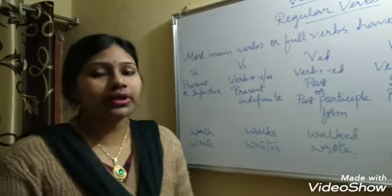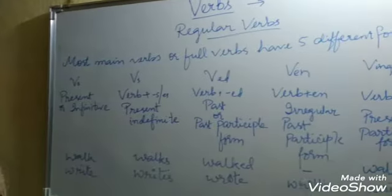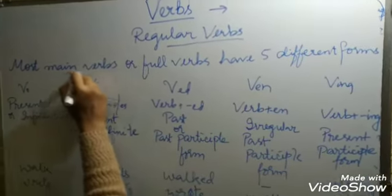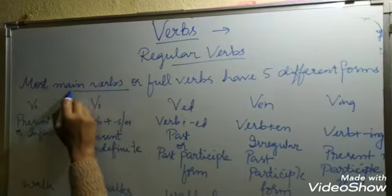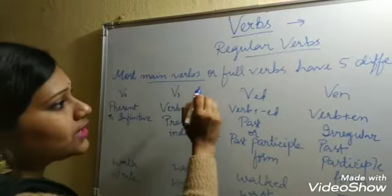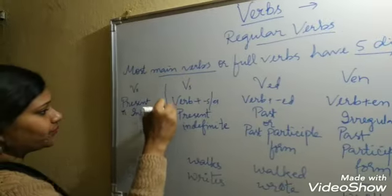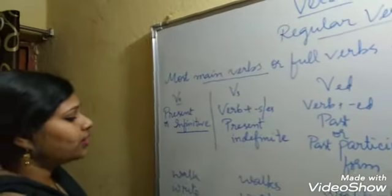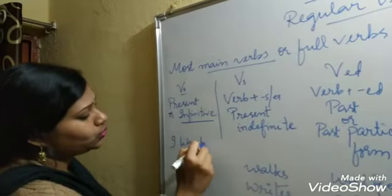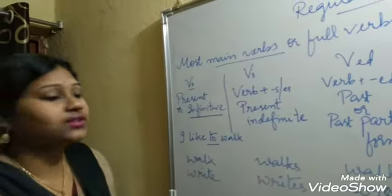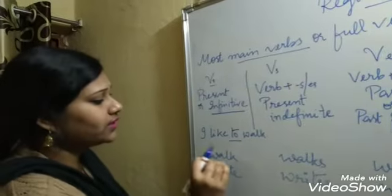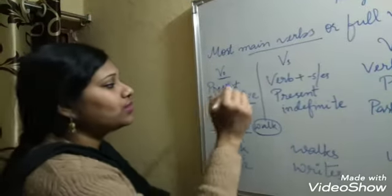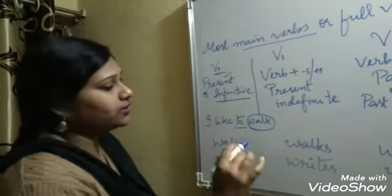Before knowing what regular and irregular verbs are, first see that the main verbs — or full verbs — have five different forms. The first is V0: nothing is added. This is the present or infinitive form. Like when you say 'I like to walk' — the use of 'to' makes it an infinitive. Whenever you are using the infinitive, nothing is added to the verb. It is also used in the present form.